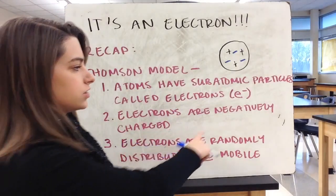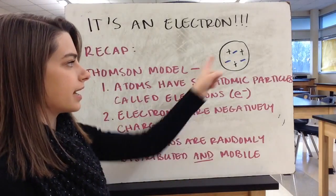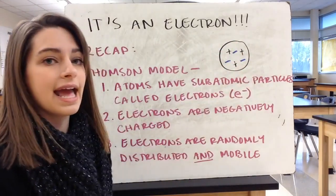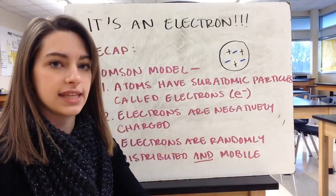These electrons are negatively charged. That's why we write it with a little minus. And then electrons are randomly distributed throughout the atom and they're mobile. They can move within the atom to one side or the other. They can leave the atom. They can enter an atom to make it positively or negatively charged.